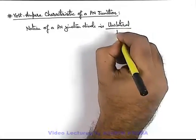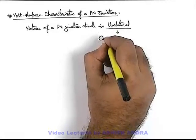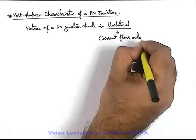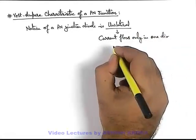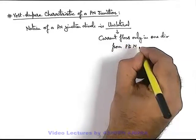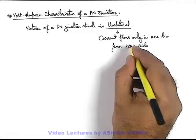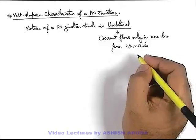Unilateral implies current flows only in one direction, from P to N side. If current is supplied from N side to P side it does not flow because of reverse biasing, as we've already discussed in previous sections.